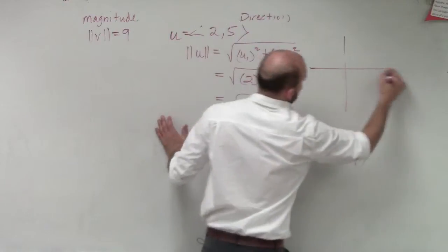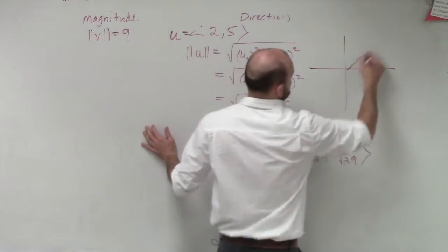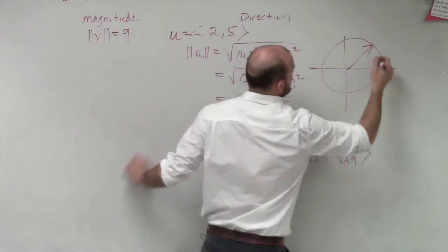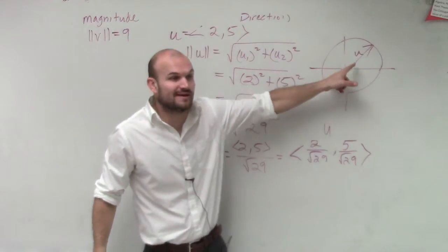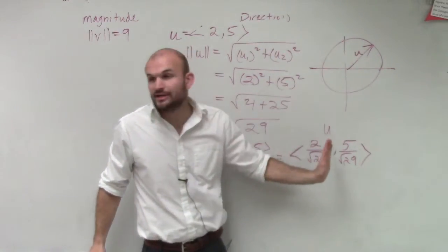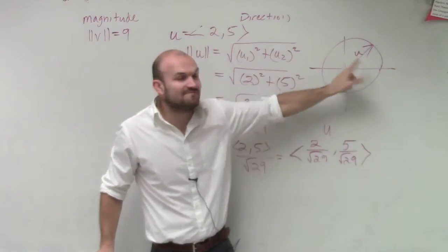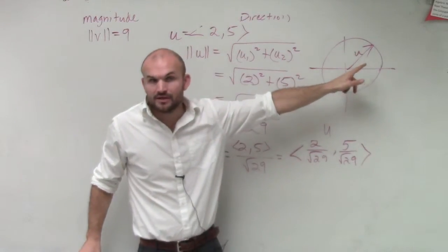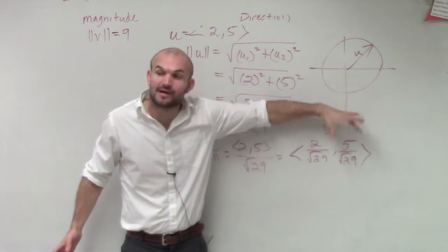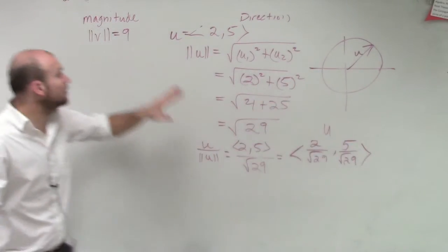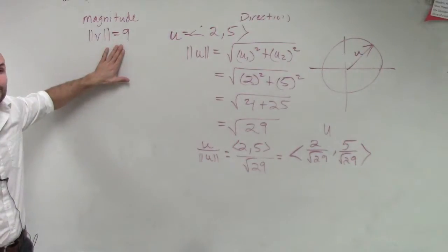Let's go back to our standard form. This now is my unit vector u. We found the unit vector u. We found how far we needed to go over and how far we needed to go up to find the unit vector u. So now that is my direction. I found the direction of the unit angle. Now if I want it to have a magnitude of 9,